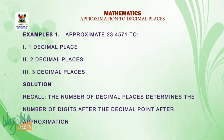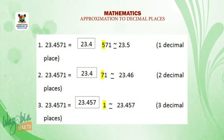Now let us take this one after the other. To one decimal place, it means we need one digit after the decimal point. Now recall that the number of decimal places determines the number of digits after the decimal point. So, 23.4571 will be equal to 23 point, the first digit after the decimal point is 4.